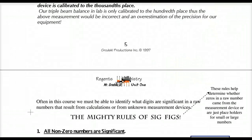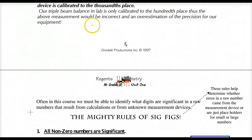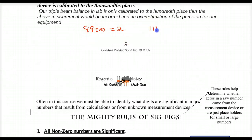Coming up are the mighty rules of sig figs, but I want to talk about how this all makes sense before giving you the rules. If I give you a number like 88 centimeters, you know there are two significant figures — two non-zero digits. If I give you 111 centimeters, that's three significant figures — three different units that came from the measurement.